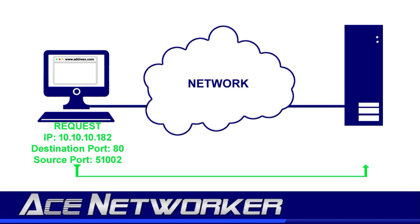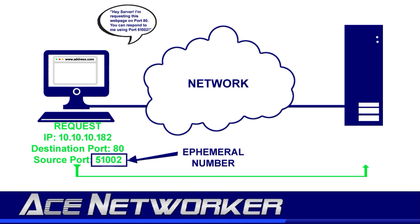In order for a server to communicate back to the client, it uses a source port number, which is provided by the client itself. Going back to the web page example, the client sends a request on destination port 80, but also notifies the server of its own source port — something like: 'Hey server, I'm requesting this web page on port 80, you can respond to me using port 51002.' Port 51002 is the source port, also known as an ephemeral port, because it is made up by the client for use with that request.